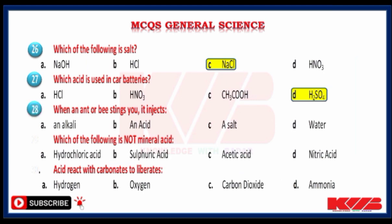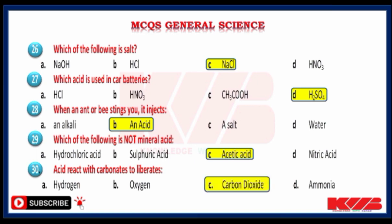When a bee stings you, it injects an alkali, an acid, a salt or water? An acid. Which one of the following is not a mineral acid? Hydrochloric acid, sulfuric acid, acetic acid or nitric acid? Yes, acetic acid. Acids react with carbonates to liberate hydrogen, oxygen, carbon dioxide or ammonia? Yes, carbon dioxide.